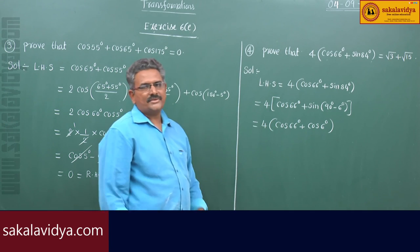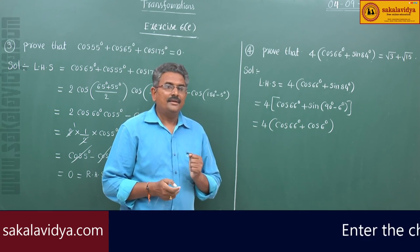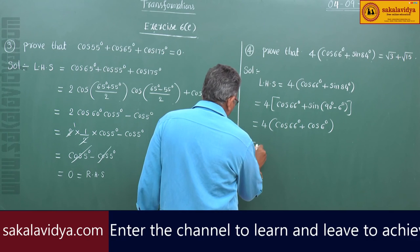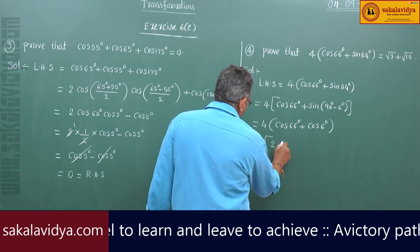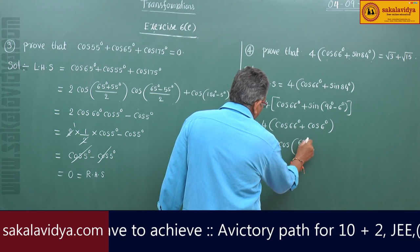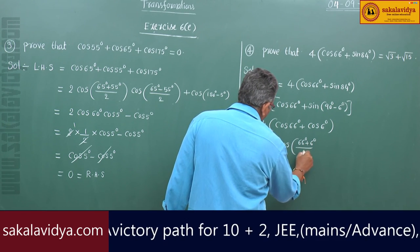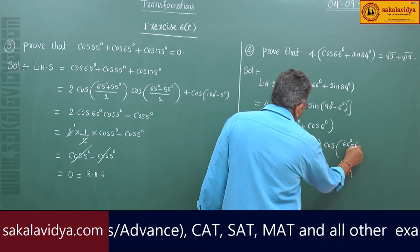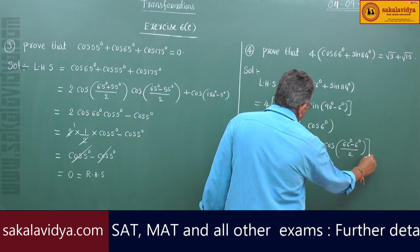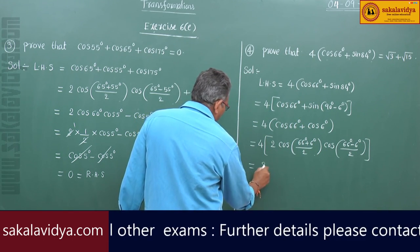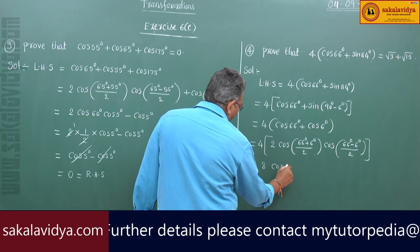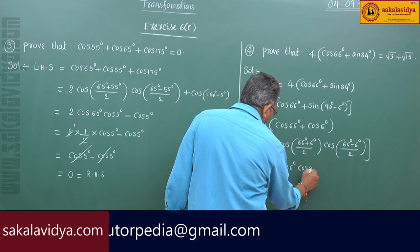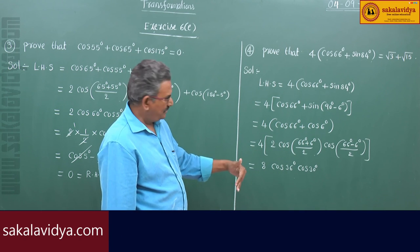Applying the cos C plus cos D formula: 2 cos((C+D)/2) cos((C-D)/2). We get 4 × 2 × cos((66°+6°)/2) × cos((66°-6°)/2), which is 8 cos36° cos30°. Here 66° - 6° = 60°, so 60/2 = 30°.